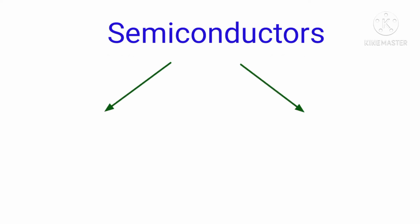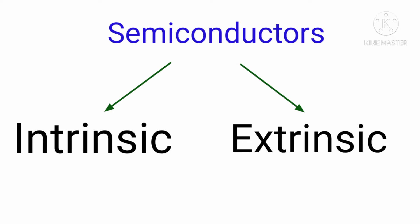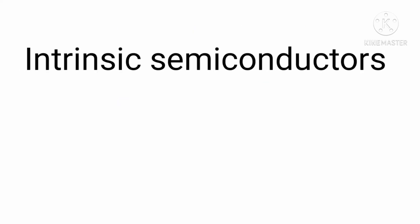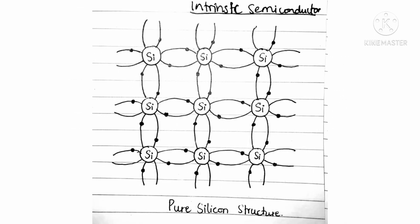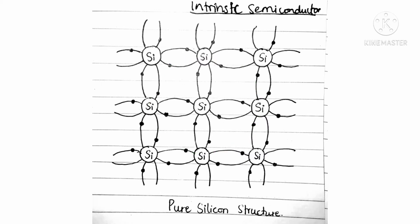Intrinsic semiconductors are pure semiconductors with no impurities added. Examples are pure silicon and pure germanium. Silicon has four valence electrons in its outermost shell. Every silicon atom shares its four valence electrons with its four neighbors and takes one electron from each neighbor, completing their octet. These shared electron pairs form covalent bonds. At absolute zero temperature, no electrons are available for conduction and silicon behaves like an insulator.